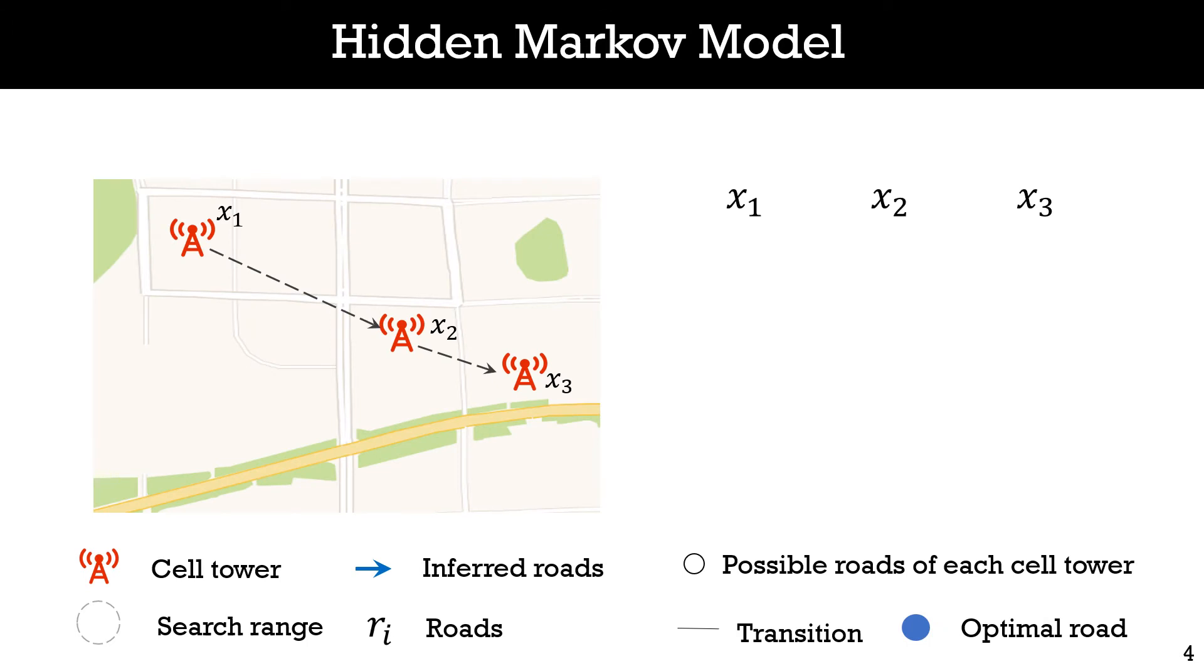Many map matching approaches have been proposed. Most of them use hidden Markov models. We first introduce the basic process of the model. Take the trajectory on the last page for example. The model first searches for candidate roads within a search range of each cell tower. Because of the large location error of cellular data, the search range should be large enough to cover all possible roads. This ensures that the candidate roads contain the true route a user is actually on, but this greatly increases the search space. To make it easier to explain, we just consider a few candidate roads in our example.